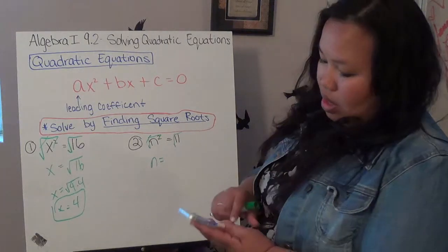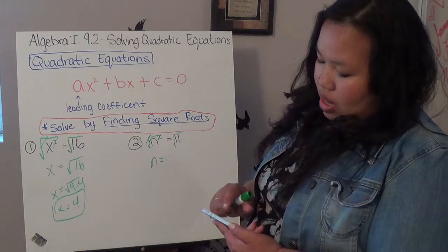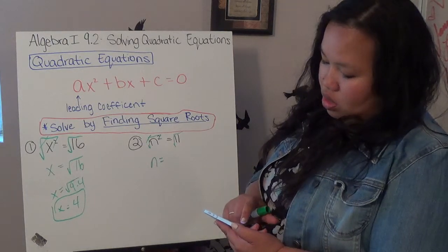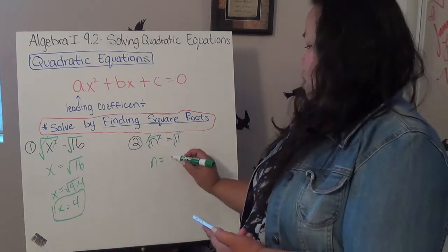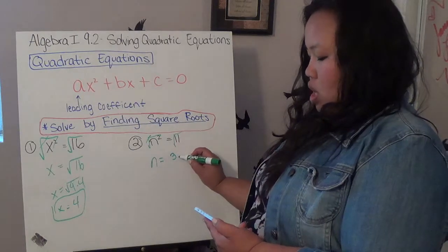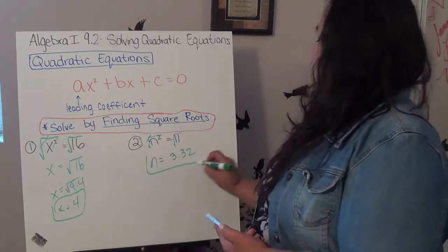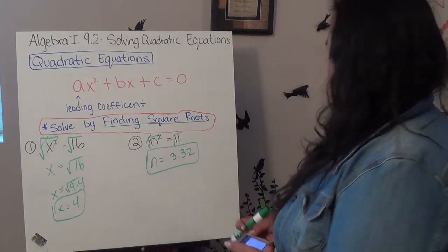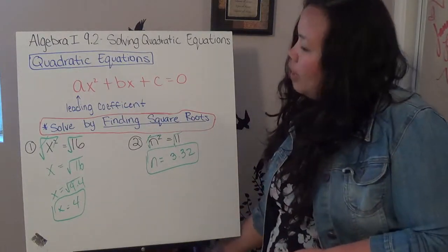So, I'm going to take out my calculator, and I'm going to do 11 square root, which gives me approximately 3.32.